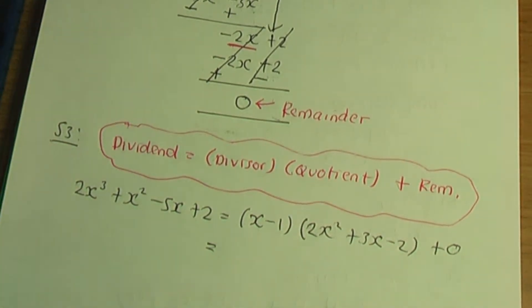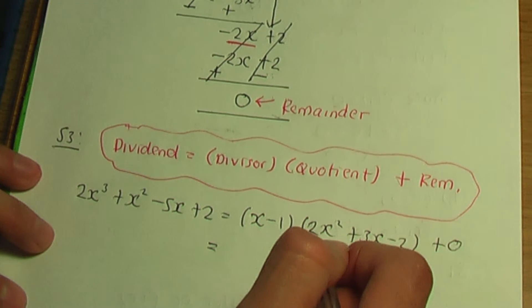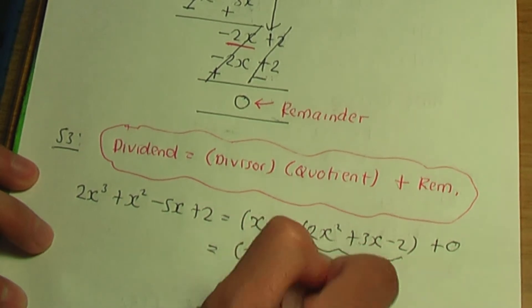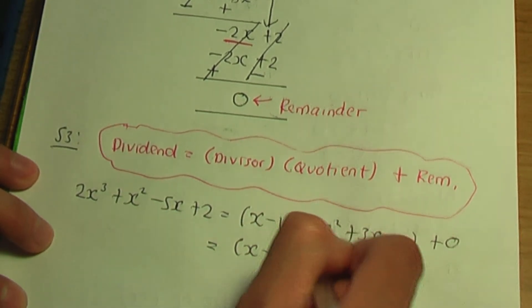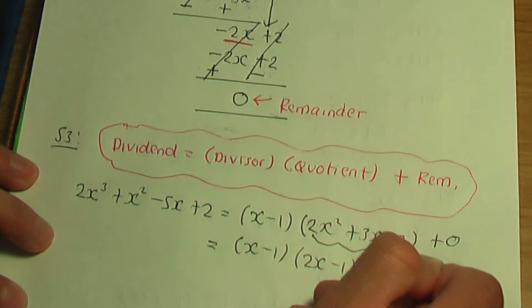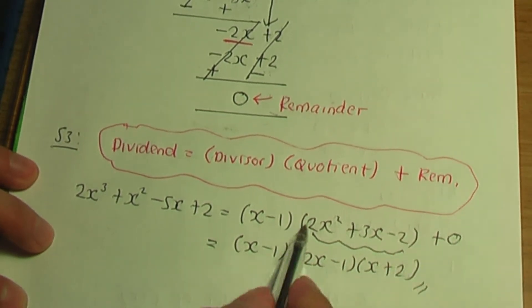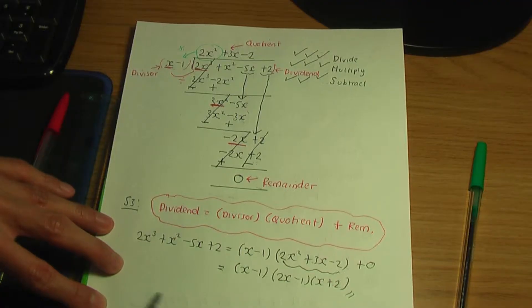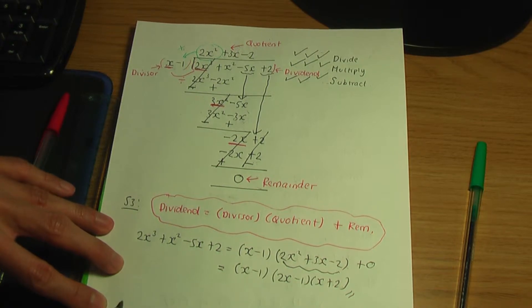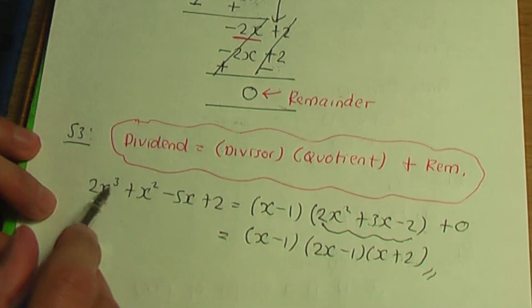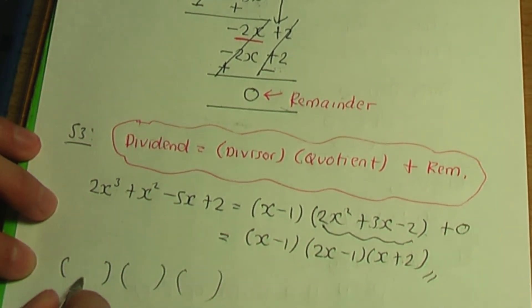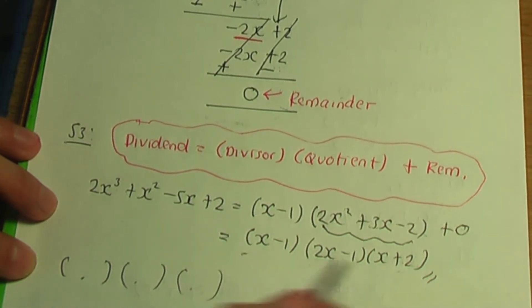Now what's left is to factorise the quadratic 2x squared plus 3x minus 2. If you factorise that quadratic, the two factors are 2x minus 1 and x plus 2. So factorising completely means rewriting the cubic polynomial as a product of three factors, which is exactly what we've done here.